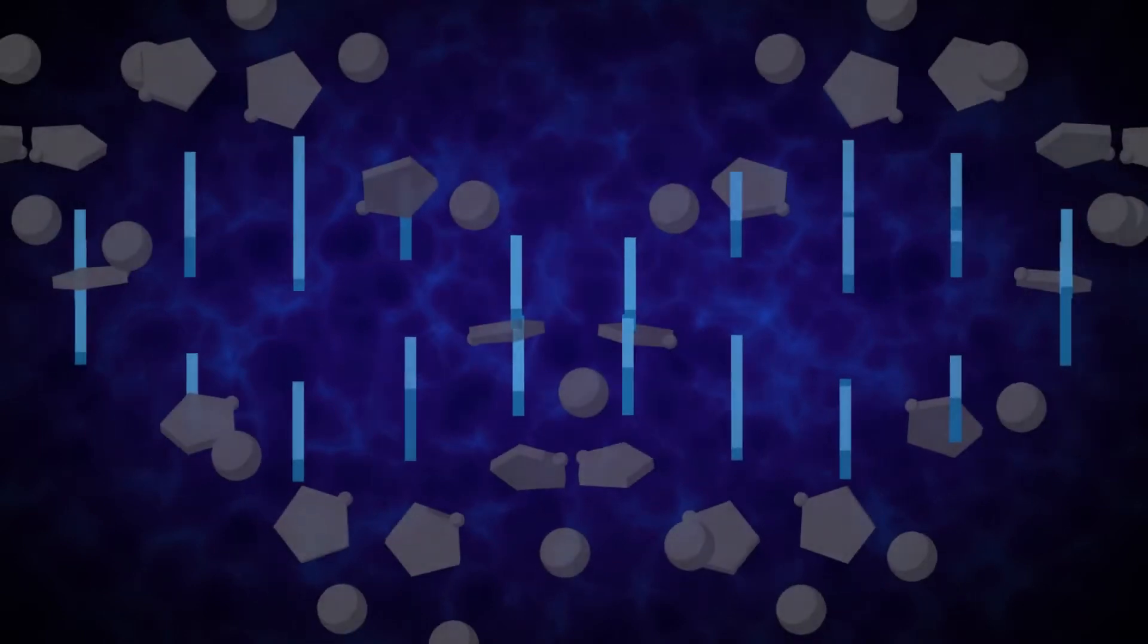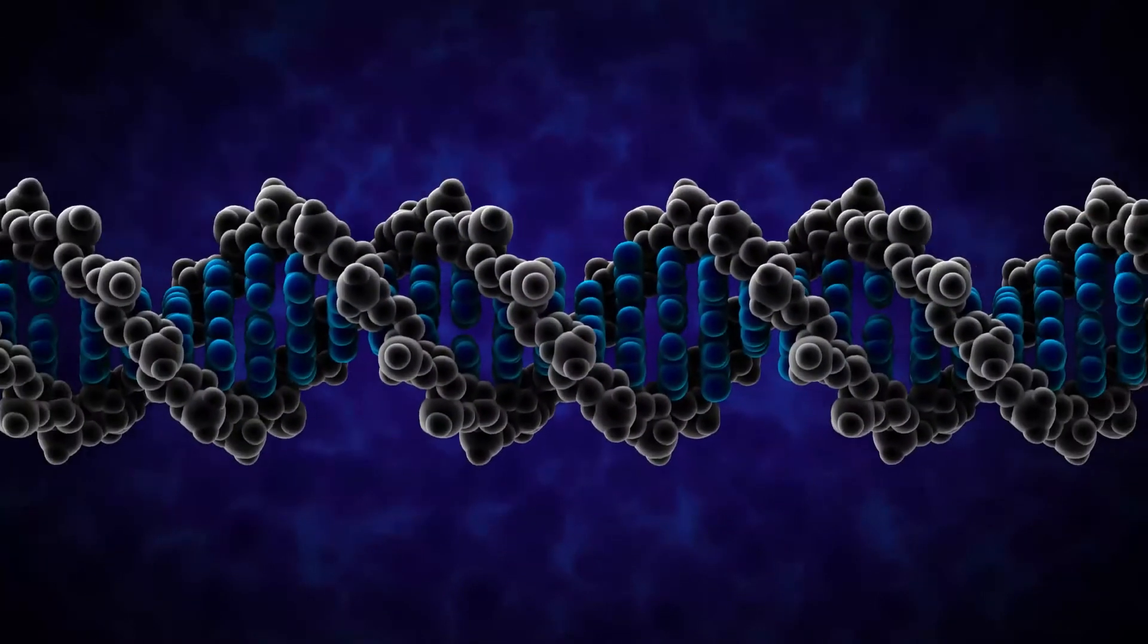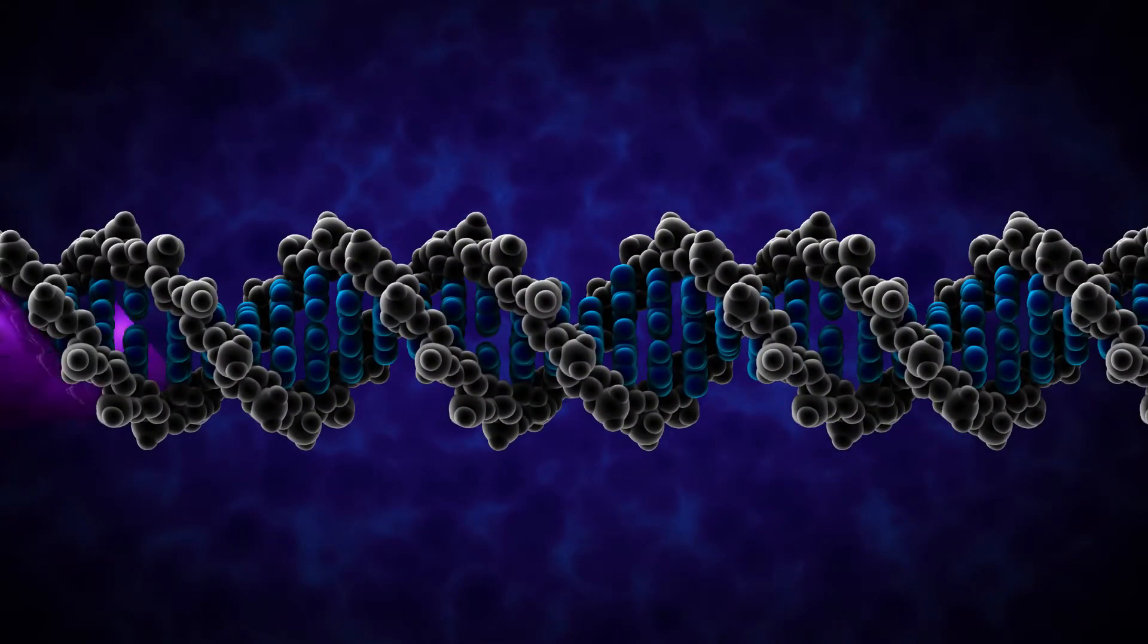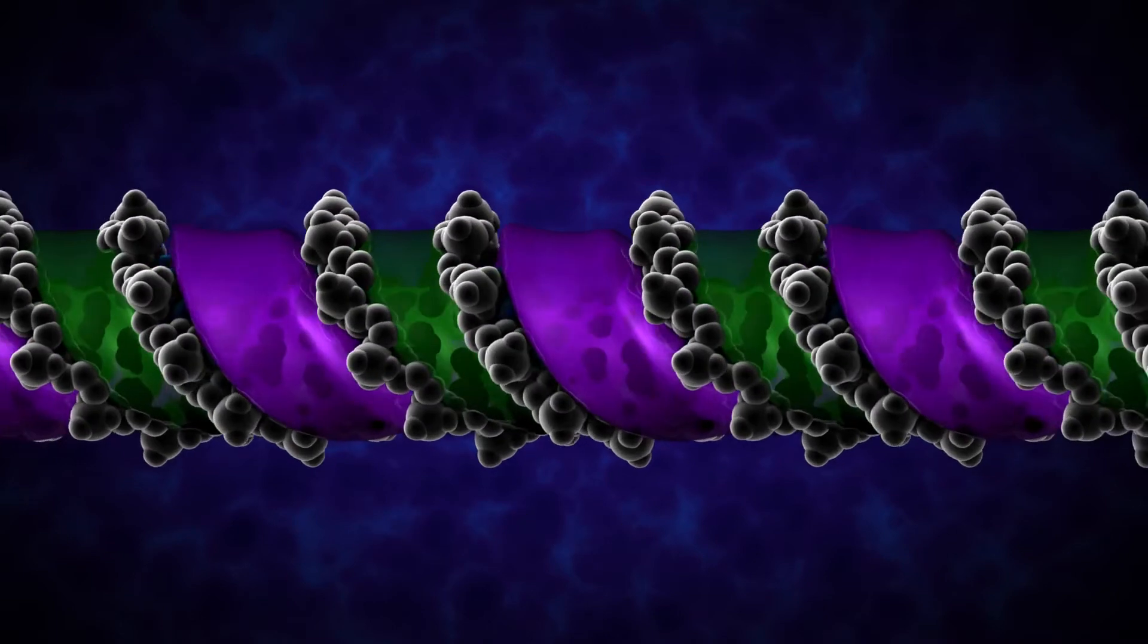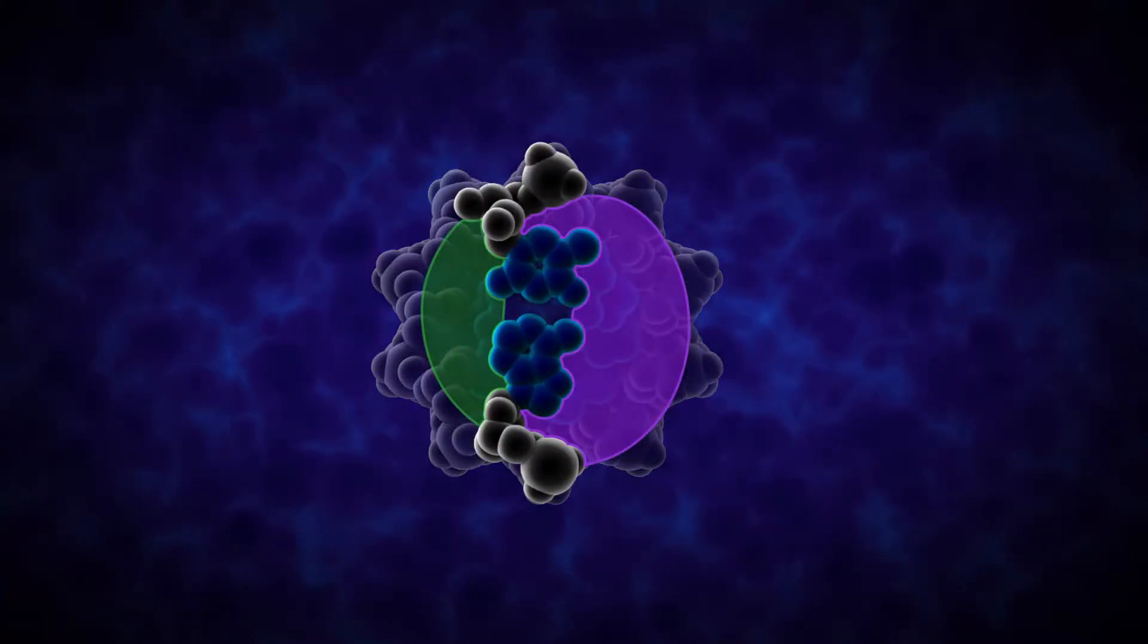The regularity of the helix structure forms two repeating and alternating spaces called the major and minor grooves. These grooves act as base pair recognition and binding sites for proteins.